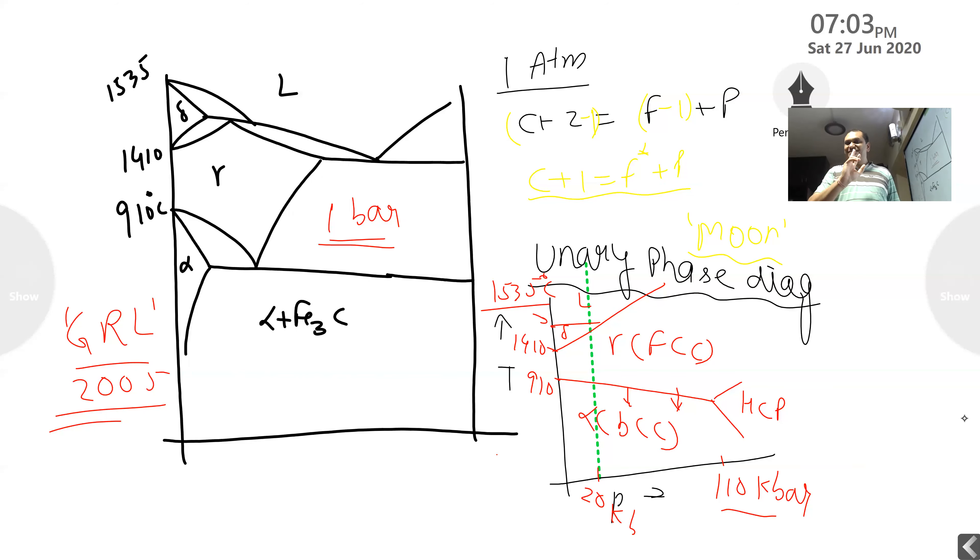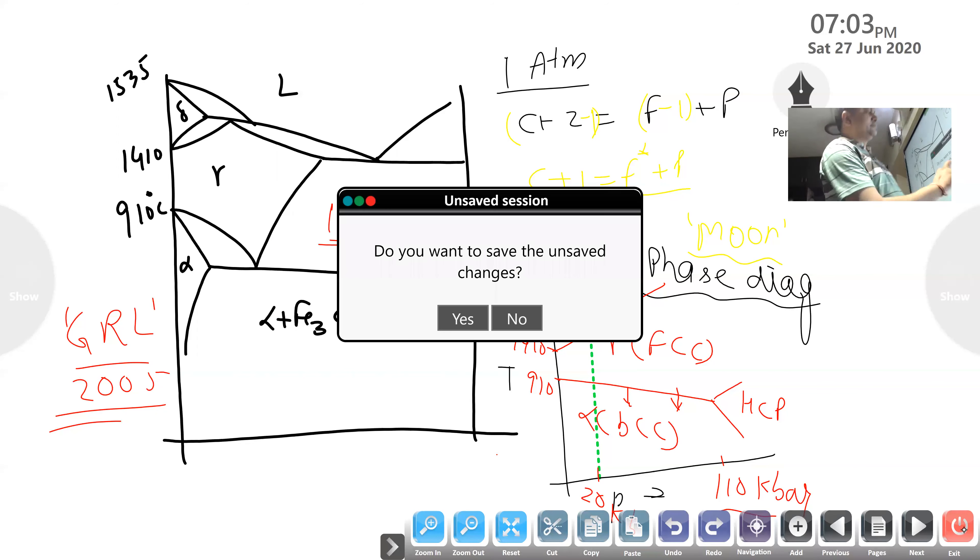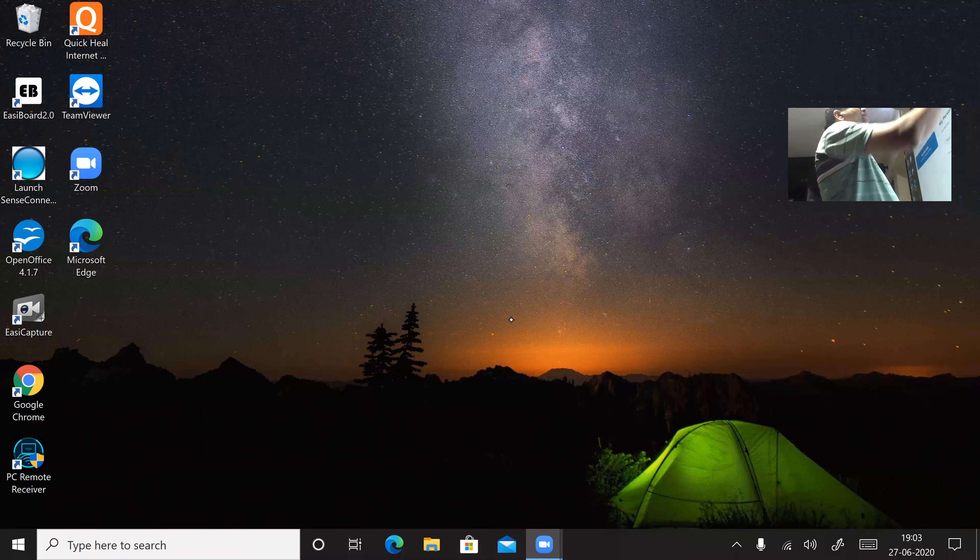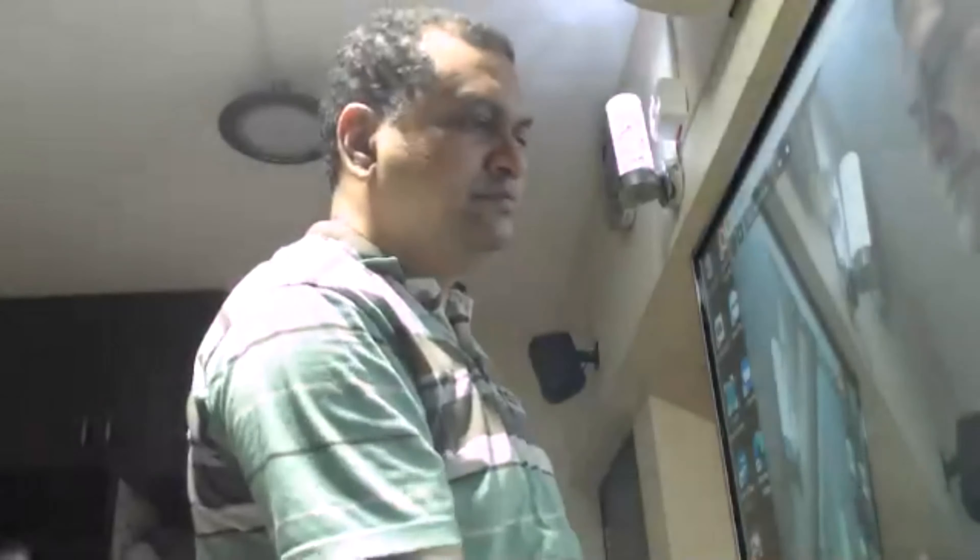So that is the answer. When we keep on decreasing the pressure, then solid solubility of carbon in iron will increase, and upon increasing the pressure it will decrease. That's the thing I wanted to communicate. Thank you very much.